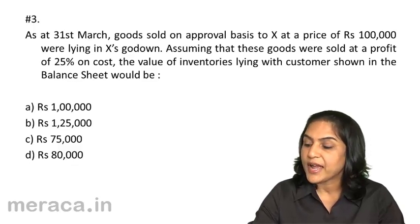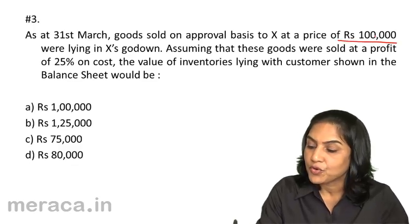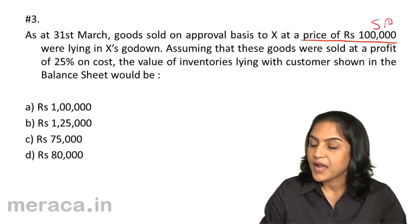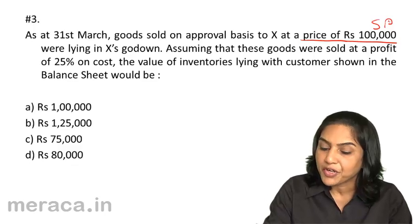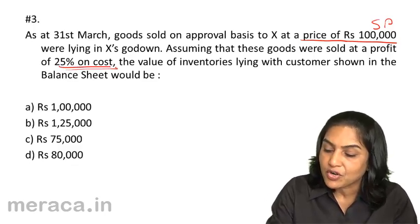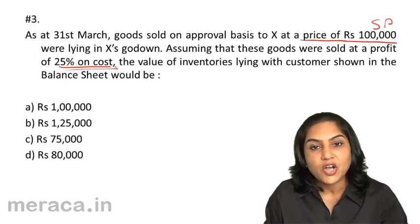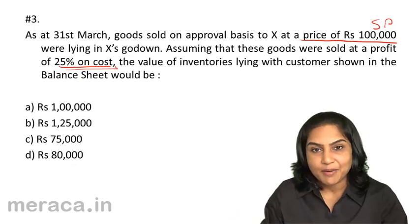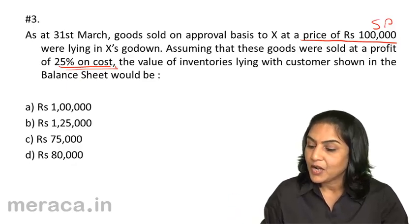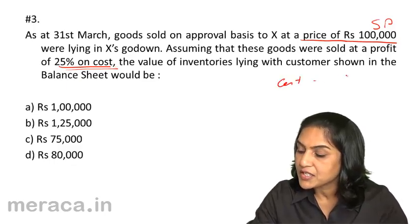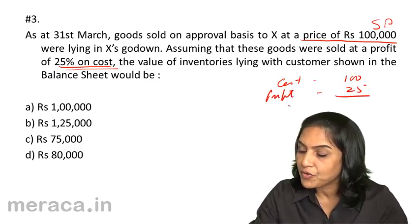Goods were sold at a price of Rs. 1,00,000. Therefore, this is the selling price — this is the sale value. The profit element was 25% on cost. Therefore, the value of inventories should be valued at cost price since it is lower than the sale price. Now, what would be the value of these inventories? If the cost is 100, profit would be 25, and therefore the selling price would be 125.